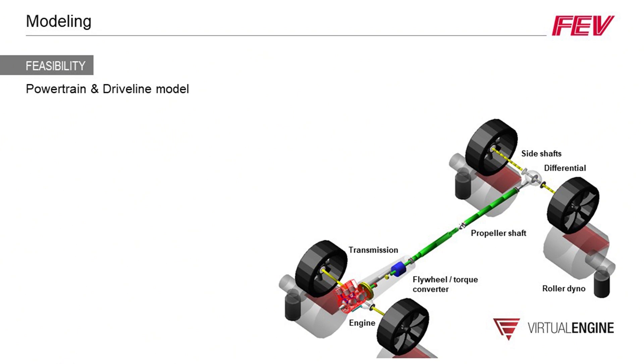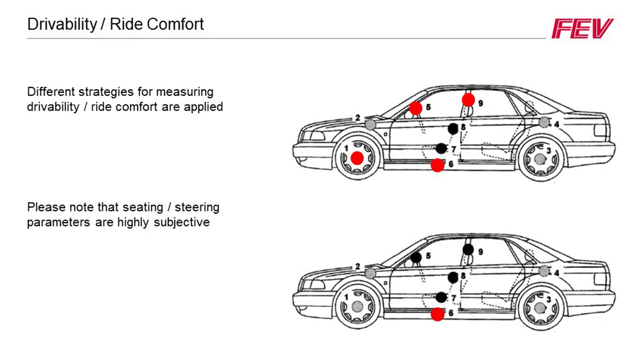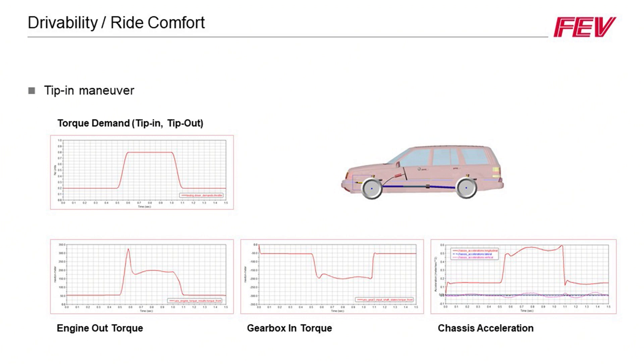Could you tell me a little bit more about drivability and ride comfort? Before that, let me elaborate on the vehicle NVH phenomena. Engine vibrations not only excite the vehicle body in the sound field through the engine mounts, but the speed and torque fluctuations coming from the engine also travel along the driveline and eventually to the vehicle body. We use FEV's VINCE method — which stands for Vehicle Interior Noise Simulation — to determine possible improvements and tackle NVH phenomena.